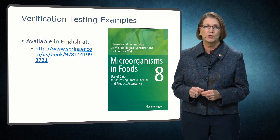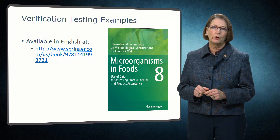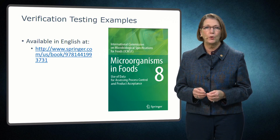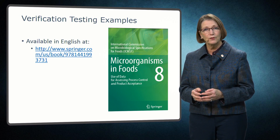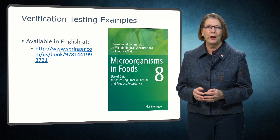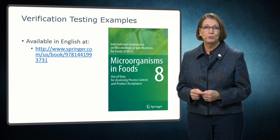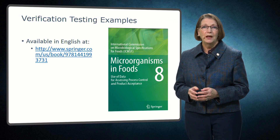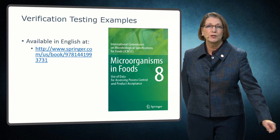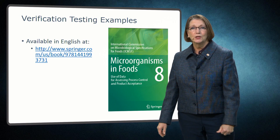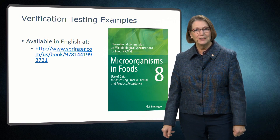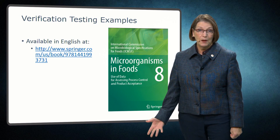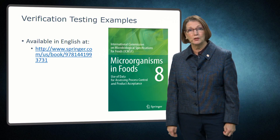Introductory chapters also address general principles related to microbiological testing of food, including validation of control measures, verification of process and environmental control, corrective action to re-establish control, and microbiological testing in customer-supplier relationships. You can find information on this book on the publisher's website. Translations of Book 8 are also available in Spanish, Portuguese, Chinese, and Japanese. In 2018, the second edition of Microorganisms in Foods 7 is anticipated, and Book 7 provides more information on validation and verification.